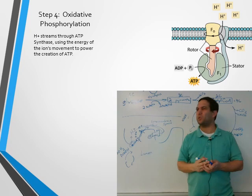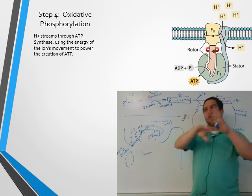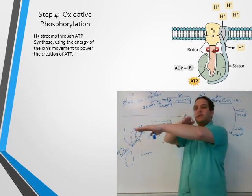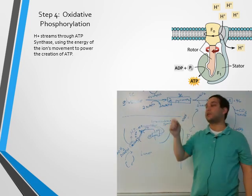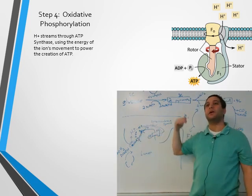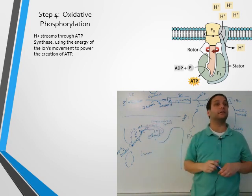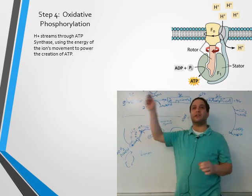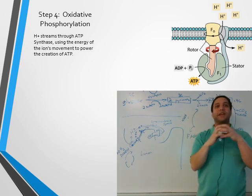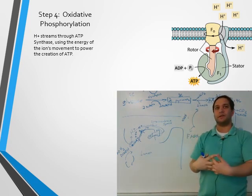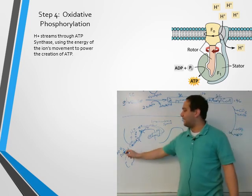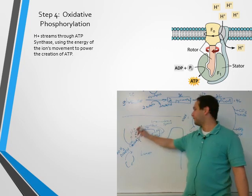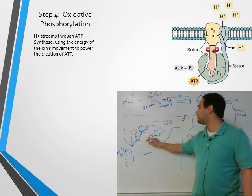ATP synthase works almost like a water wheel. In a river, if you put a wheel in the flow, it spins, pushed by the current. You're converting the movement of these hydrogen ions into mechanical energy — the energy of motion. This is secondary transport. So as that wheel gets pushed, it's taking ADP and a phosphate and putting them together, converting ADP into ATP.